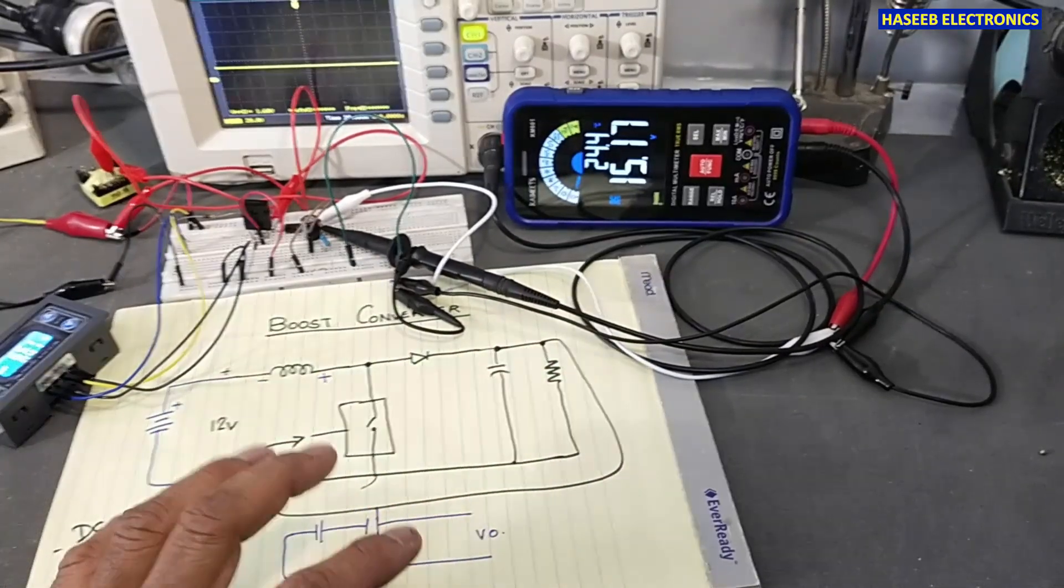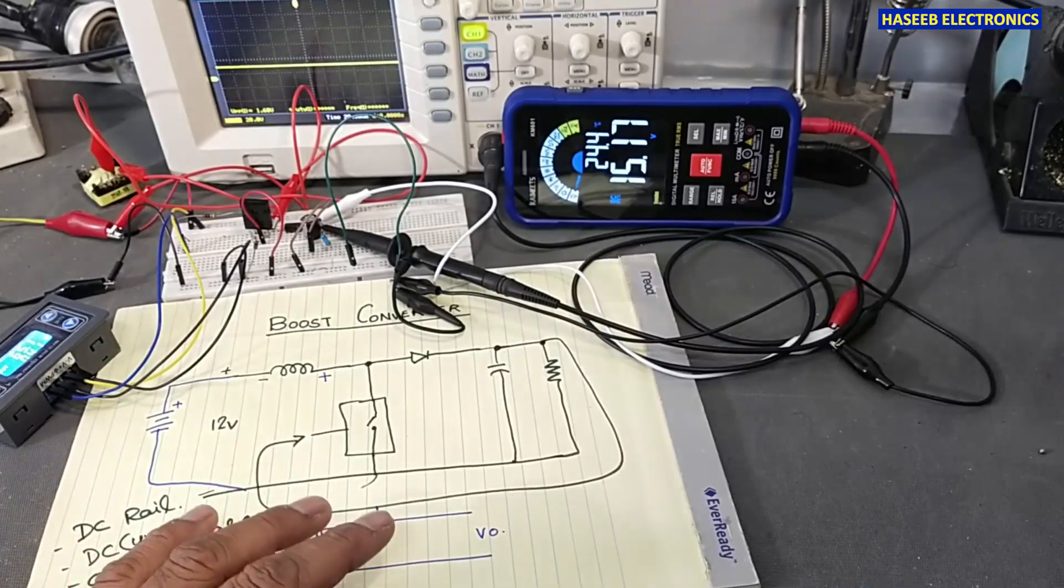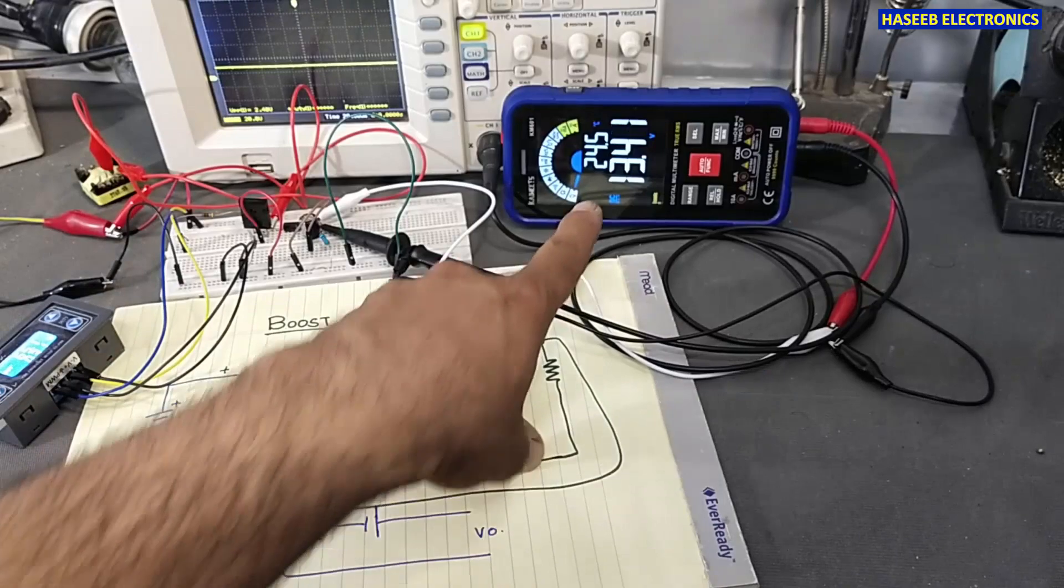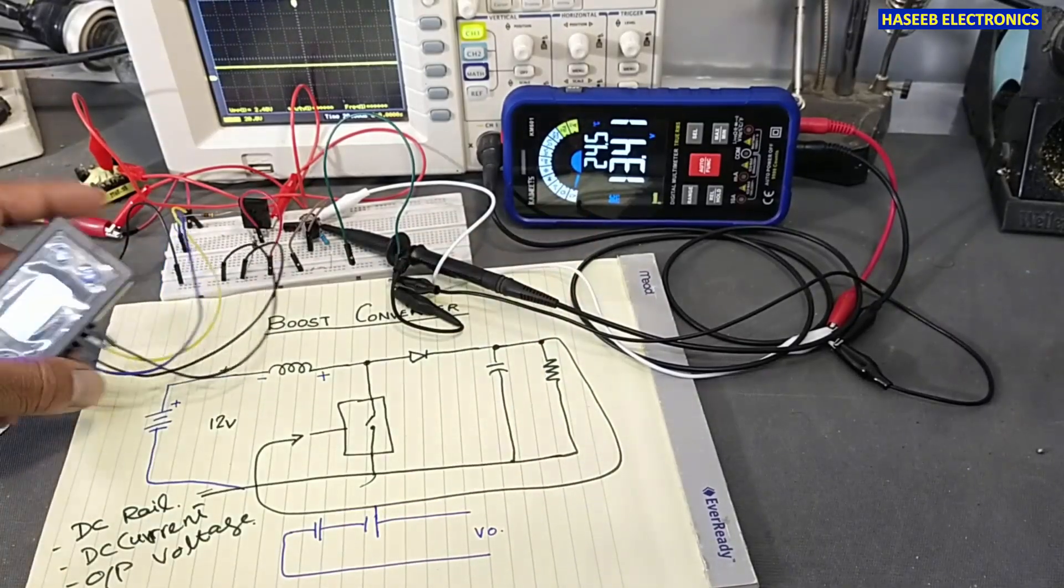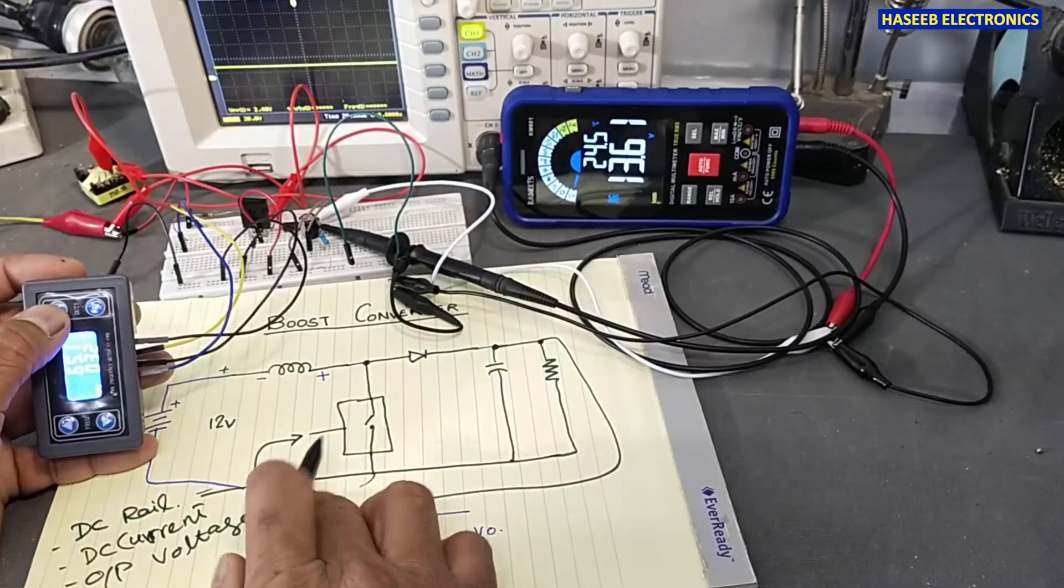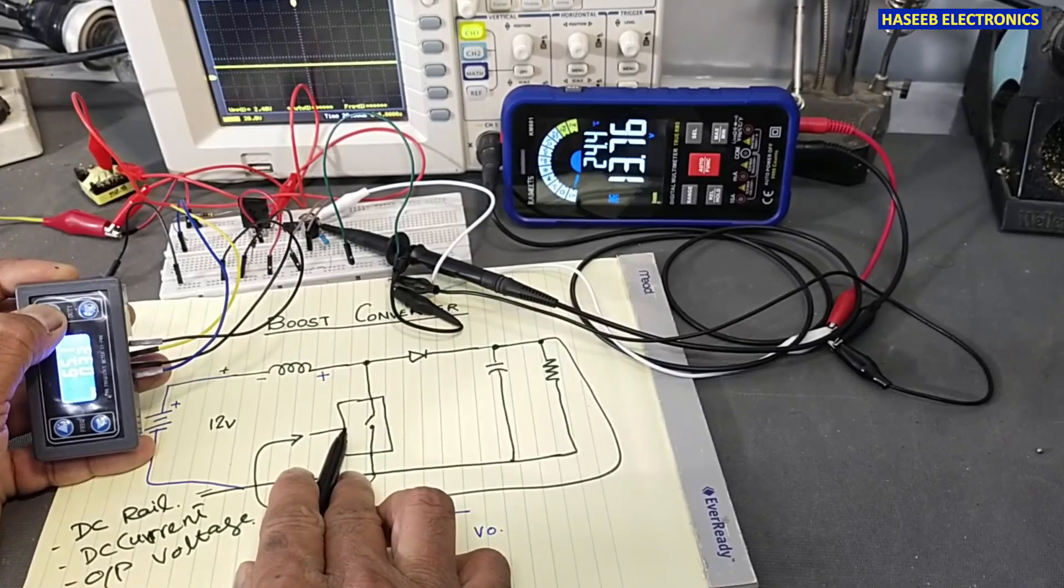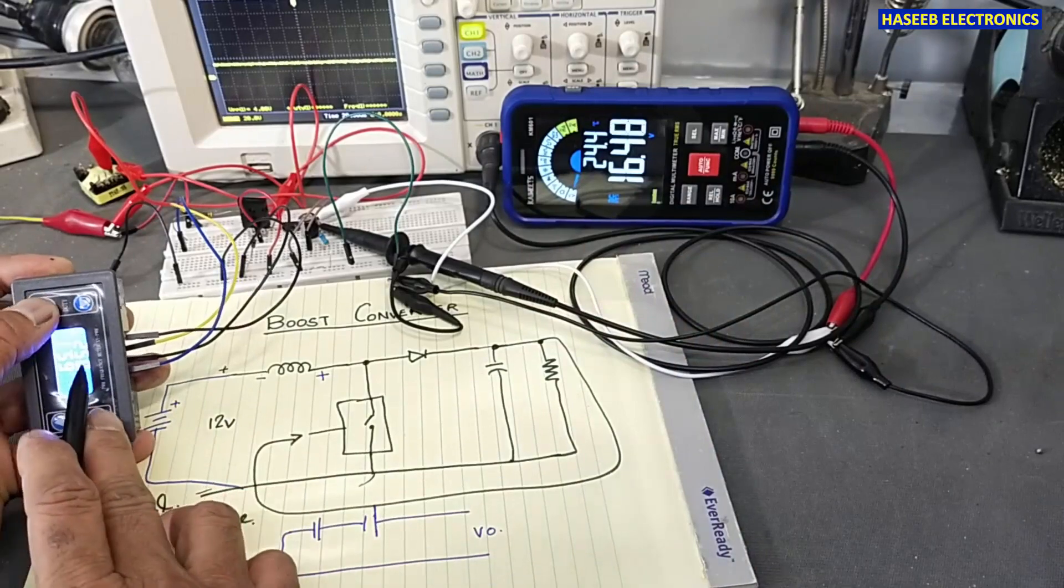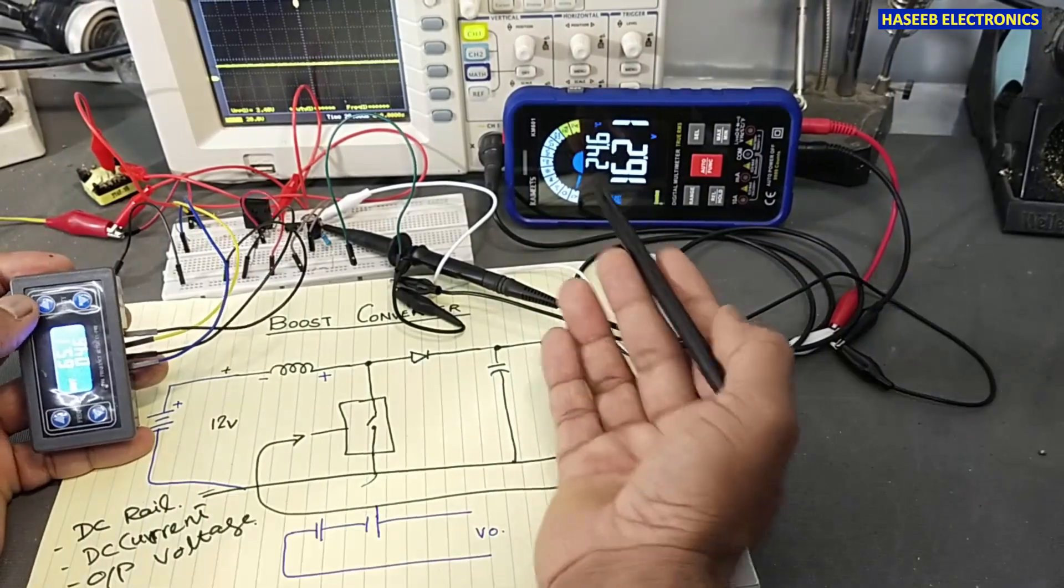So it is a very useful circuit and most commonly used in systems. To maintain the voltage, it controls its turn-on time. If the voltage is increasing in the output, it will decrease its duty cycle. If the voltage is decreasing, it will increase the duty cycle to maintain the voltage in the output line.